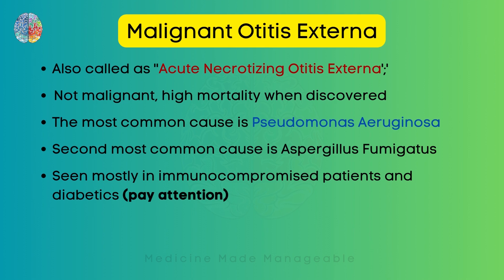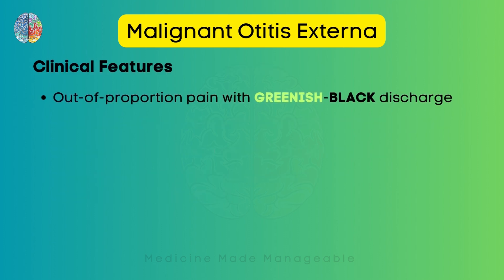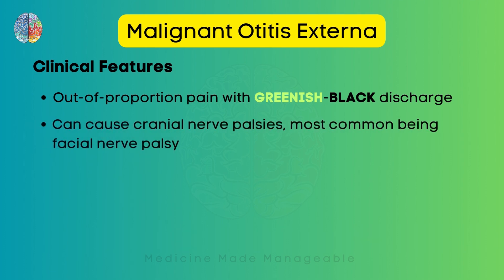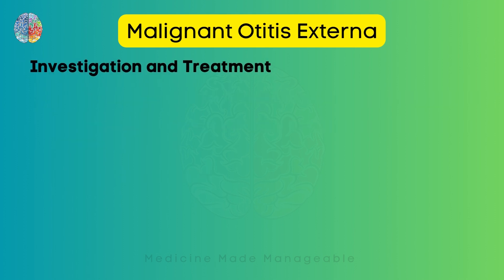In exam questions about malignant otitis externa, it is very likely that the patient will be described as either immunocompromised or diabetic — pay close attention to this. There will be severe, out-of-proportion pain with greenish to black discharge. MOE can also cause cranial nerve palsies, most commonly facial nerve palsy. Granulation tissue in the EAC is another very important finding that will almost always be mentioned in exam questions.